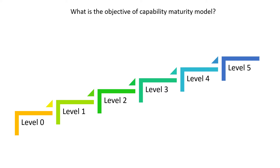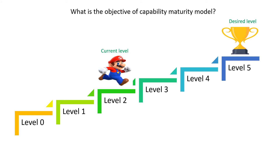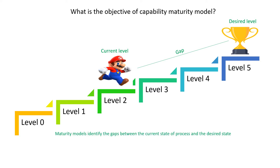What is the objective of the Capability Maturity Model? Every organization has some desired level for their risk management processes, but they may or may not be there — they may be far away or near to their desired level. The objective is to identify the gap between their current level and desired level. Maturity models help to identify the gaps between the current state of a process and the desired state.